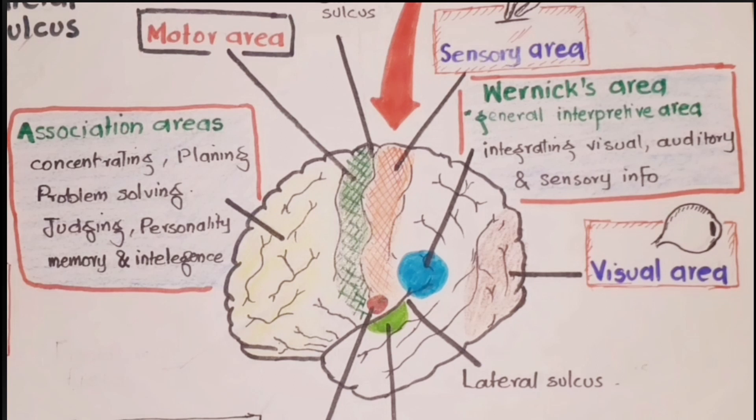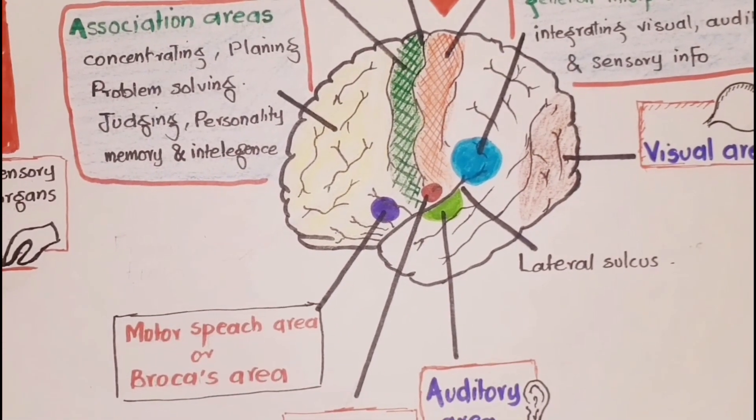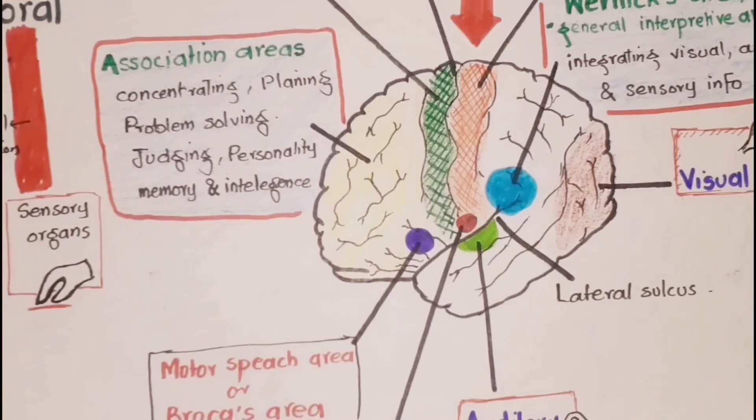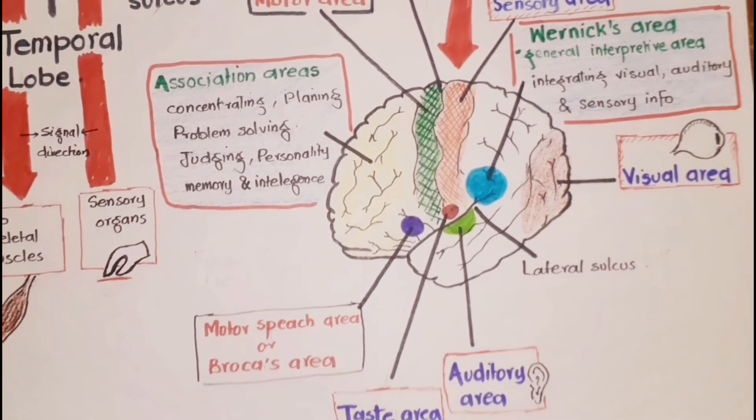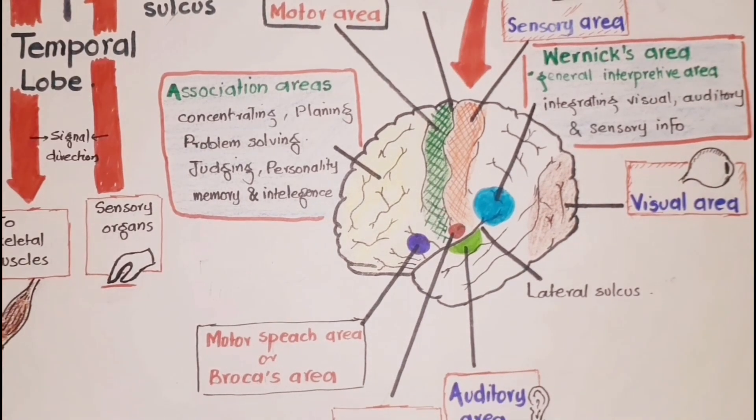In addition to the primary motor areas, certain other regions of the frontal lobe affect motor functions. This region is called the motor speech area or Broca's area. It is just anterior to the primary motor cortex and superior to the lateral sulcus. This area generates the movements of muscles necessary for speech.